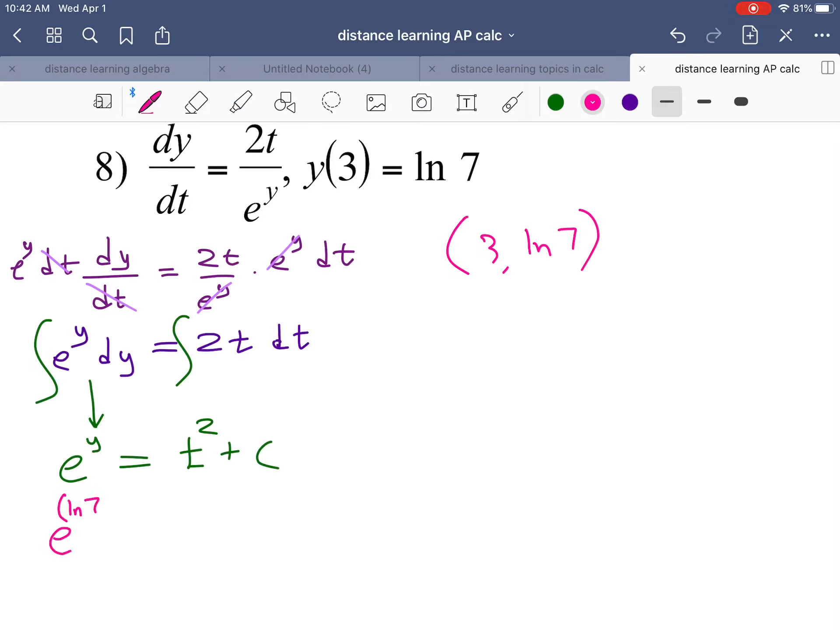So e to the ln 7 equals 3 squared plus c, that's 9 plus c. The e to the ln of 7 is just 7. Subtract 9, we get c is equal to negative 2. I'm going to rewrite this equation.